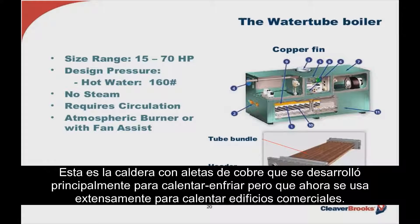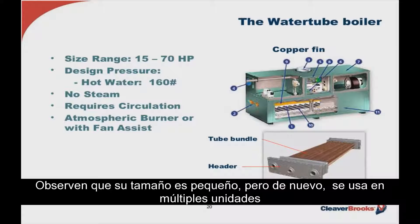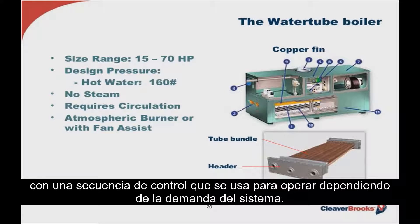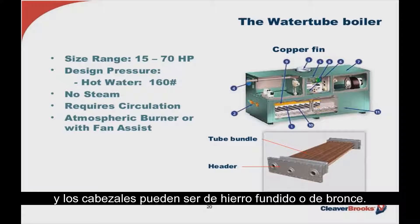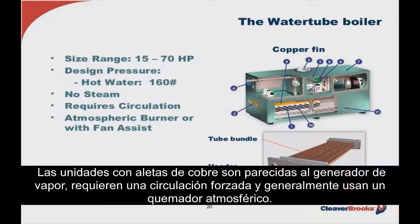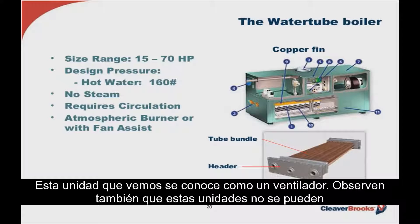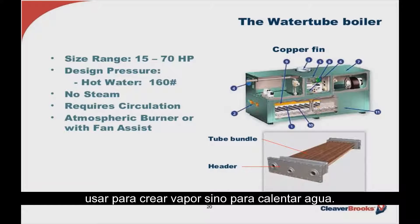The copper fin border evolved primarily for pool heating but is now used quite extensively for commercial building heat. The size range is small, and these are normally applied as multiple units with a control sequencer used to stage the firing based on system demand. The tube bundle is normally copper, but cupronickel is also available if water conditions dictate. The headers can be either cast iron or bronze for the same reason. The copper fin units require forced circulation and normally employ an atmospheric gas-fired or fan-assisted burner. These units cannot be used for steam — only hot water heating.